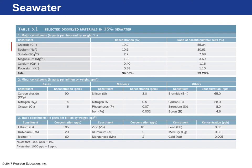Here is a comparison of seawater constituents. Some minor constituents include oxygen, nitrogen, carbon dioxide — dissolved gases — and nutrients. Then there are trace constituents present in very small amounts.